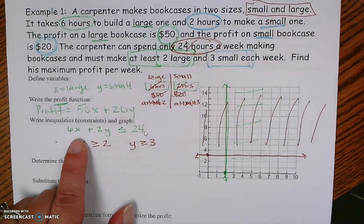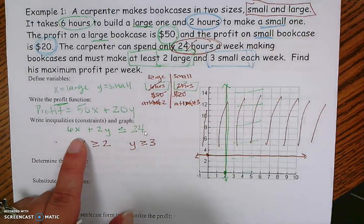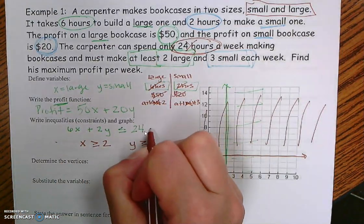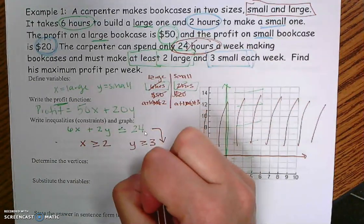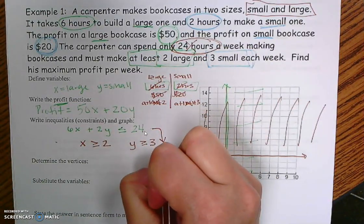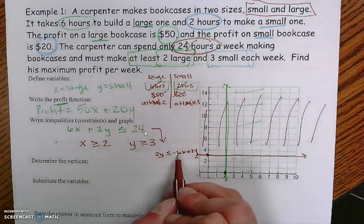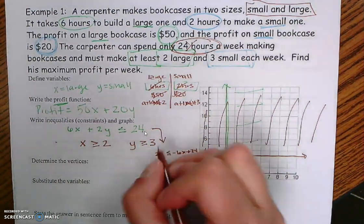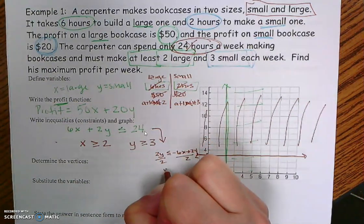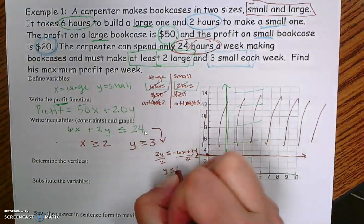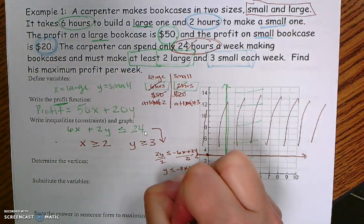My last constraint needs to be rearranged into slope-intercept form so I can graph it. I move the 6x to the other side by subtracting it, giving me 2y is less than or equal to negative 6x plus 24. Then I divide by 2. When you divide by 2, you divide both the negative 6 and the 24, giving me y is less than or equal to negative 3x plus 12. That's what my new equation becomes.